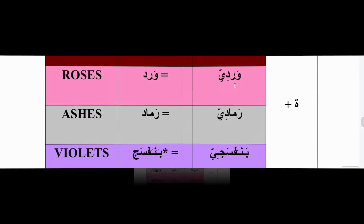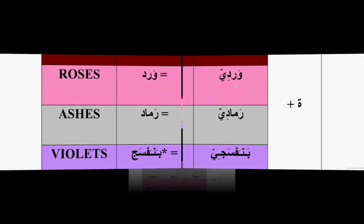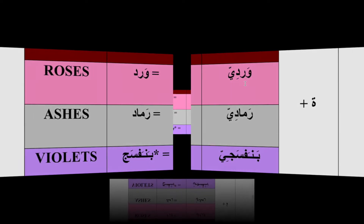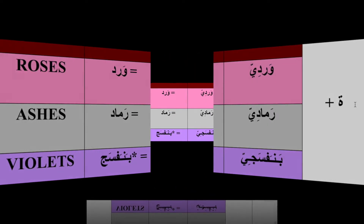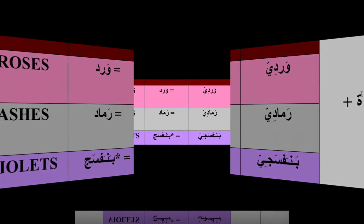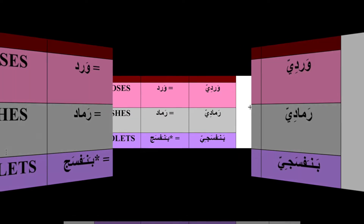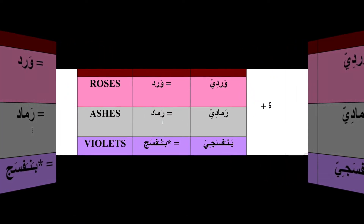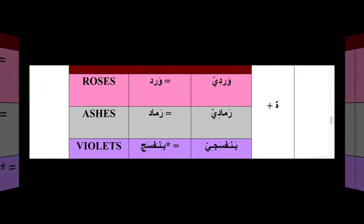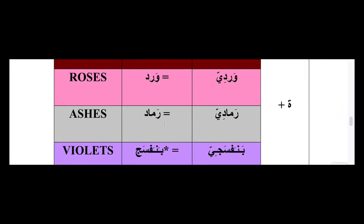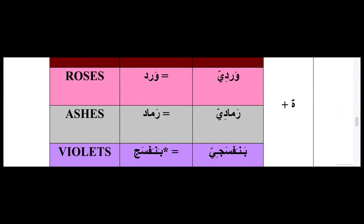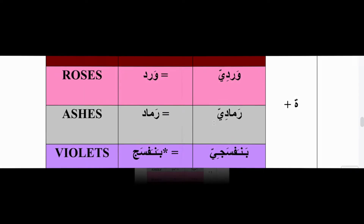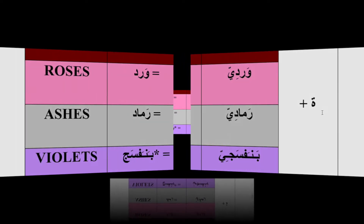The feminine form of وردي is وردية. Ashes are رماد in Arabic, and ash-colored or gray is رمادي. Violets are called بنفسج, and the adjective is بنفسجي, with the feminine form بنفسجية.